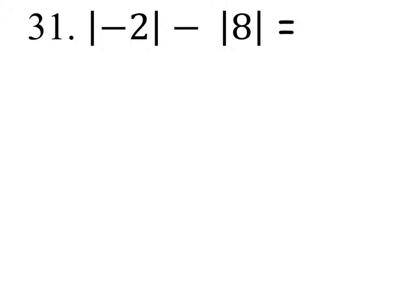Of negative 2 minus the absolute value of 8, so we'll do these one at a time. The absolute value of negative 2 is 2. Just have the minus, the absolute value of 8 is 8. Because once again, absolute value is just asking how far a number is from 0.